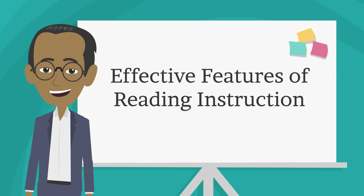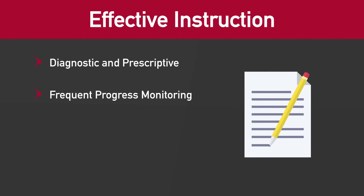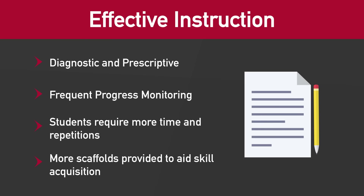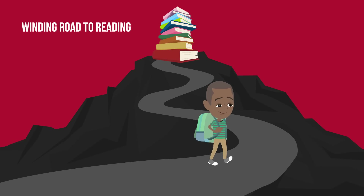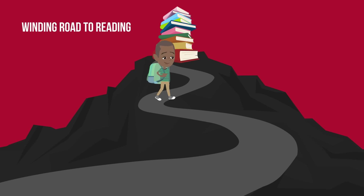There are specific features of reading instruction demonstrated as effective for students with dyslexia. Specifically, effective instruction for students with dyslexia is diagnostic and prescriptive and includes frequent progress monitoring. Students require more time to learn skills and more repetitions of practice to gain proficiency, along with more scaffolds such as mnemonics to remember spelling rules, physical prompts such as biting an apple to make the short 'ah' sound, or strategies to aid self-regulation. The road to reading for students with dyslexia may be more winding, but given appropriate intensity and support, gains in reading, spelling, and writing can be made.